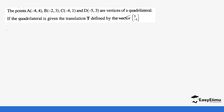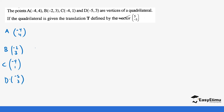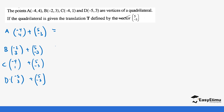Let's start with A. The position vector for OA is (negative 4, 4). The position vector for B is (negative 2, 3). C is (4, 1), and finally D is (negative 5, 3). To get the image, we need to add each point to the translation vector, which is (5, negative 3). We'll do the same for all points and then get the coordinates for each image point.